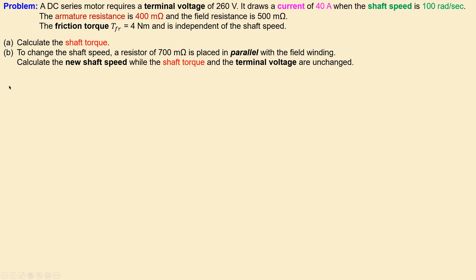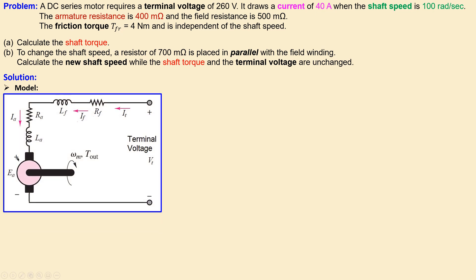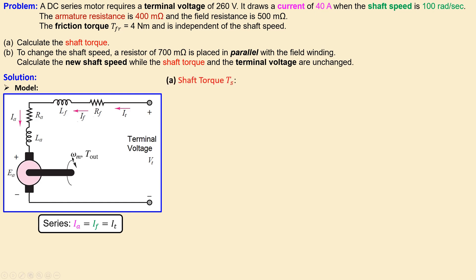Let's start with the calculation of the shaft torque. We start with our model for the series DC motor, which has the terminal voltage, the field winding resistor and inductor, the armature resistor and inductor, and the back EMF. In a series combination, the terminal current equals the field current and also the armature current.